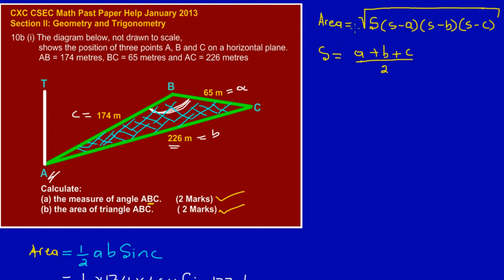First, before we can substitute any values in our formula, we are going to have to find the value of s, which is the semi-perimeter. So here I have s is equal to a, and if you notice from our diagram a would be 65, plus my b and b would be 226, plus my c which will be 174, and all of that is being divided by 2 because we need a semi-perimeter.